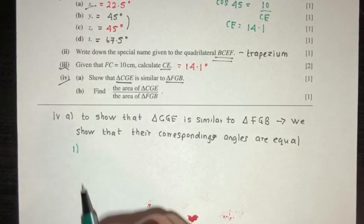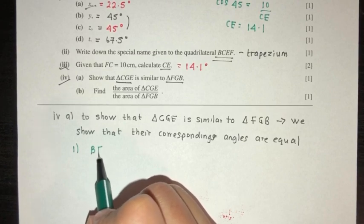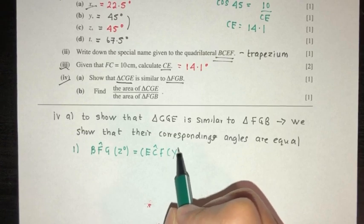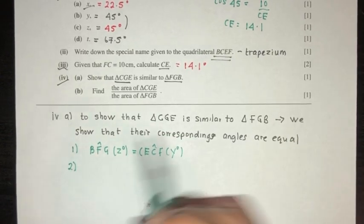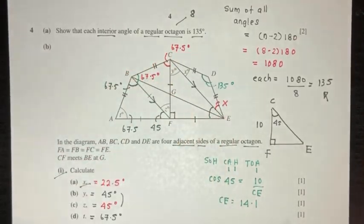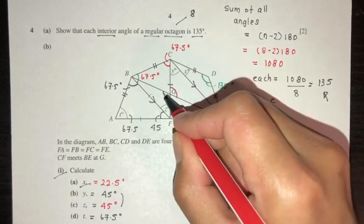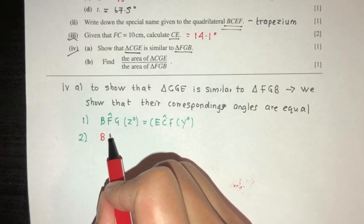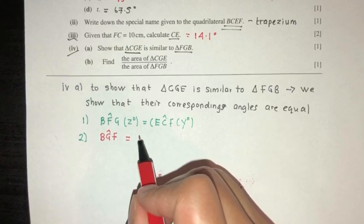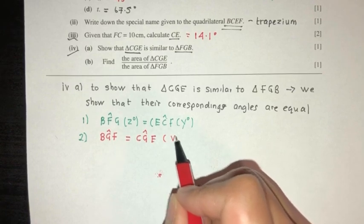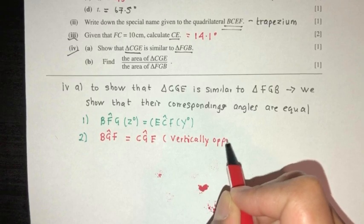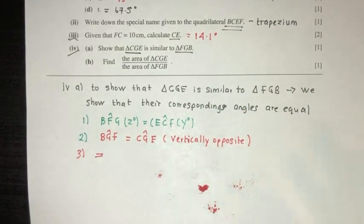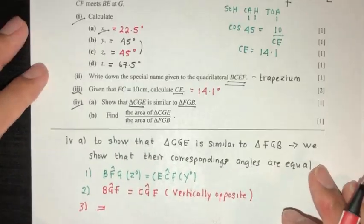For the second pair: since lines CF and BE meet at point G, angles BGF and CGE are vertically opposite to each other, so they are equal. When two pairs of angles are equal, the third pair must also be equal. By showing these corresponding angles are equal, we have proved that the two triangles are similar.